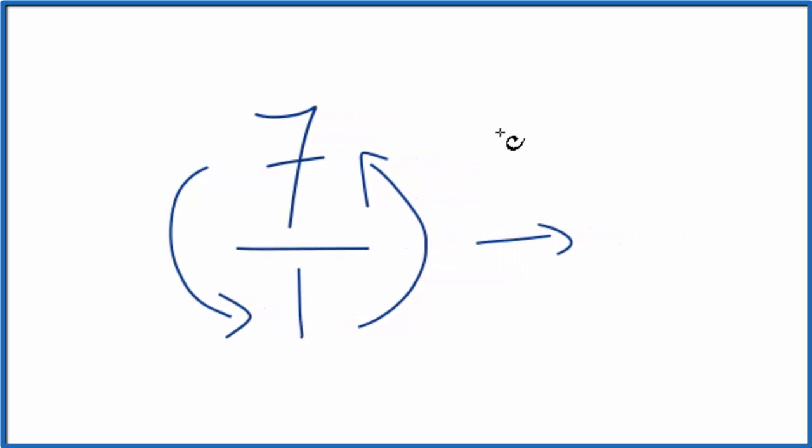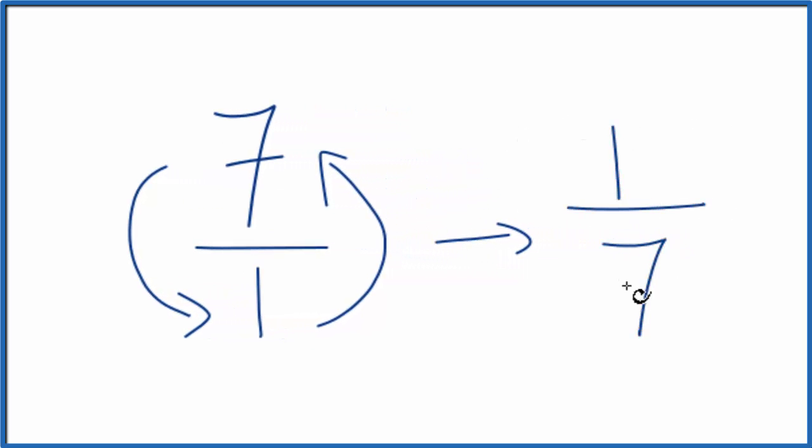So now we have 1 on top and 7 on the bottom. So the reciprocal of the number 7 is just 1 over 7.